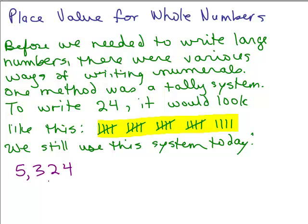So this system that we're used to — this 5,324 — actually incorporates something pretty important called place value. This doesn't mean 5 plus 3 plus 2 plus 4. Each digit, depending on where its placement is, represents something. So this 4 is really 4 ones — this is called the ones place. The 2 is in what's called the tens place, like 2 tens. The 3 is in the hundreds place. And the 5 is in the thousands place.